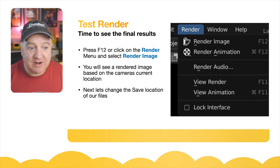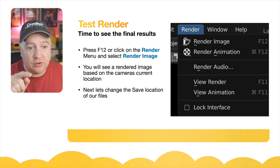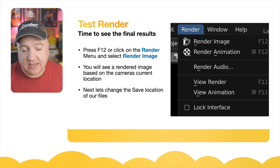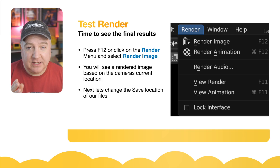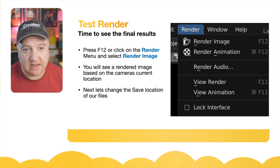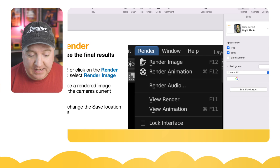To render a test image, simply press F12 or go to the Render menu and click Render Image. You'll see the image returned and it will save to the current location. You can change that save location, which we'll cover shortly. Now let's go over to Fusion first and see how to export a file.